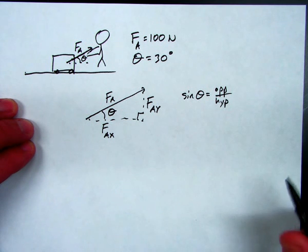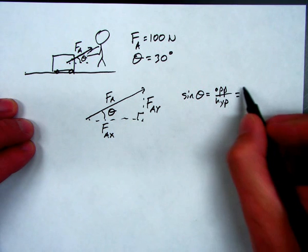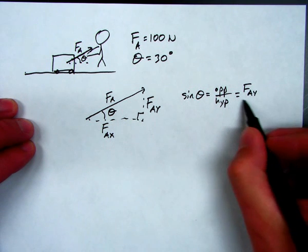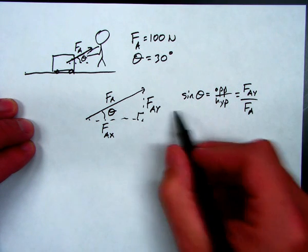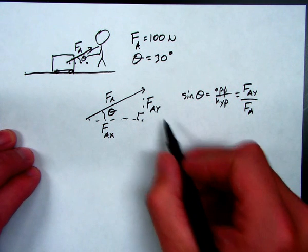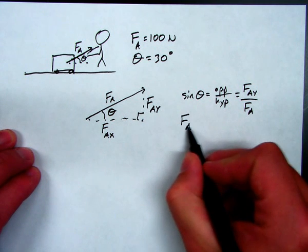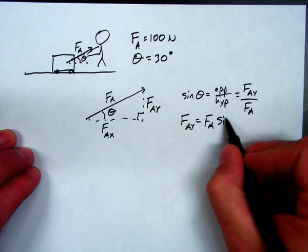But, opposite, in this case, is FAY. And the hypotenuse is FA. So, I can say, solving this equation for FAY, that FAY is simply the applied force times the sine of the angle.